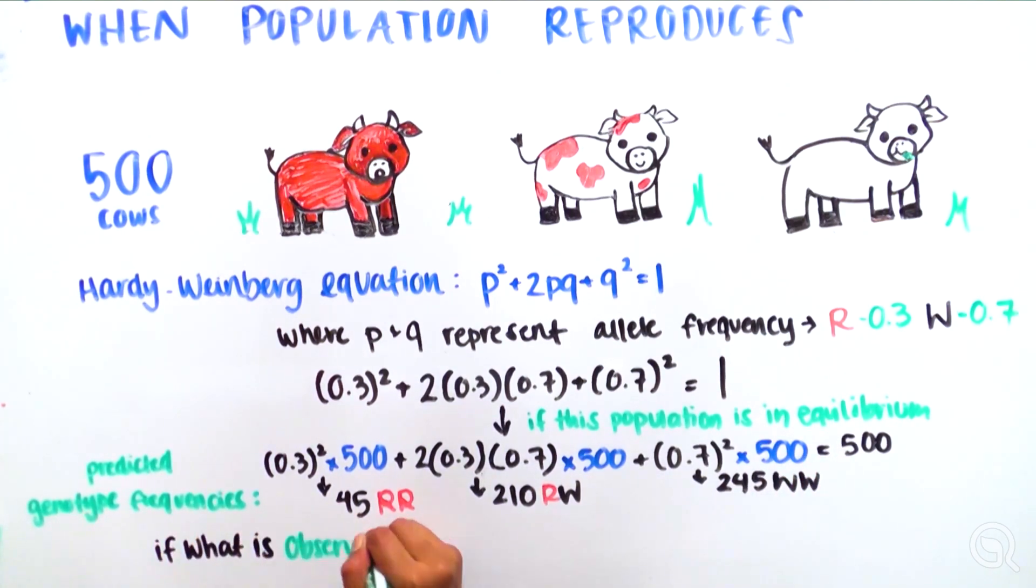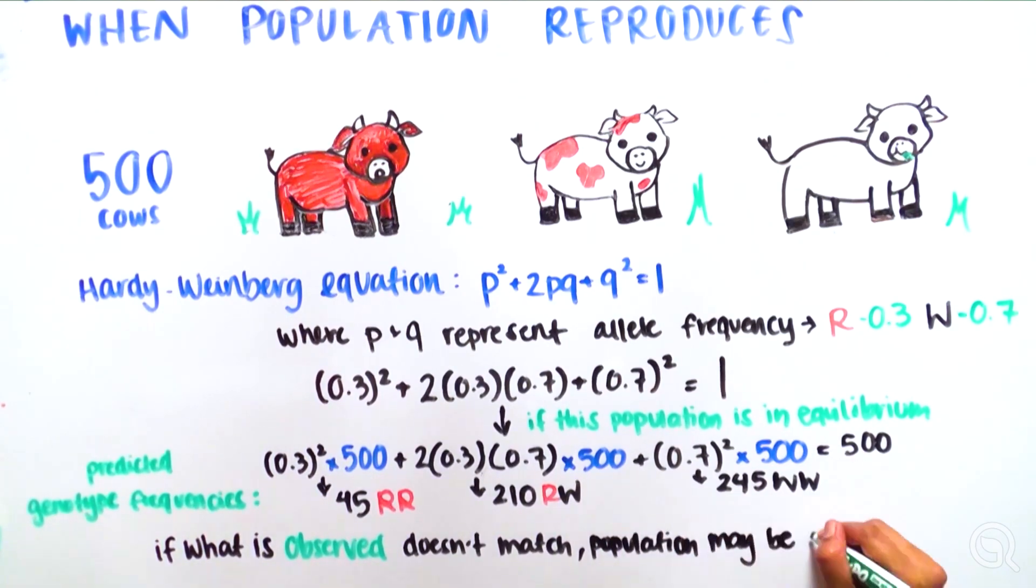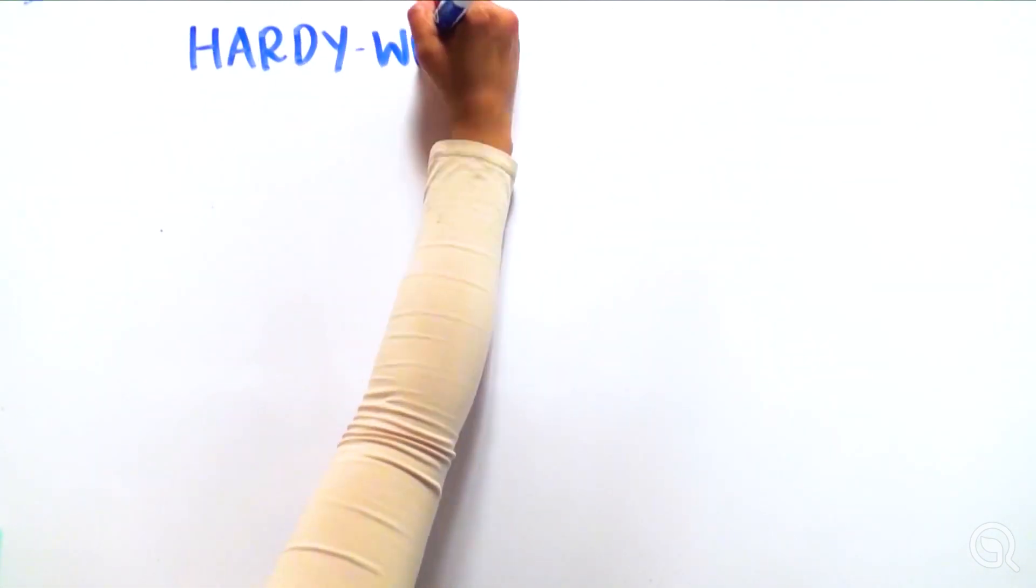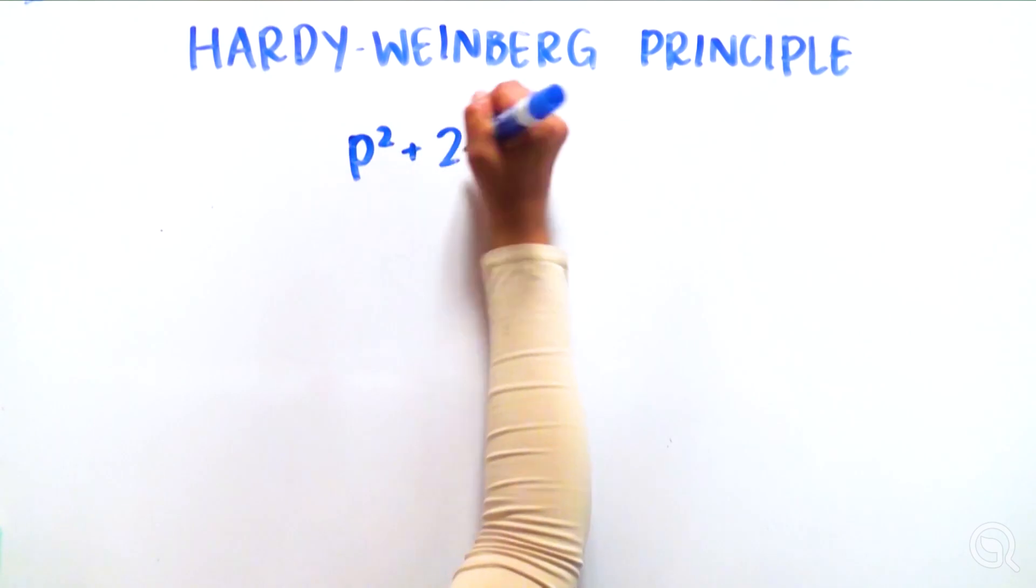If the observed genotype frequencies don't match those predicted by the Hardy-Weinberg equation, then the population is not in equilibrium, which means the population may be evolving.